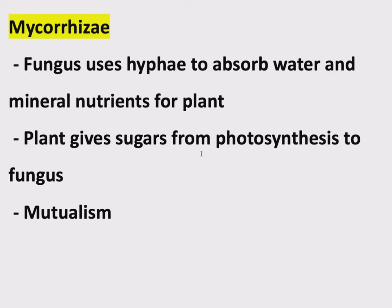In return, the plant gives sugars from photosynthesis to the fungus. So they're both benefiting from this. The fungus wouldn't be able to survive in this environment anyway, because there's no organic matter — no decaying organic matter for it to absorb. There are no nutrients, just mineral nutrients. You can't survive off of those alone. There is no organic matter for the fungus, but they're getting it from the plant's sugars. And the plant benefits because it gets a more efficient uptake of mineral nutrients and water from the surroundings. So, mutualism.